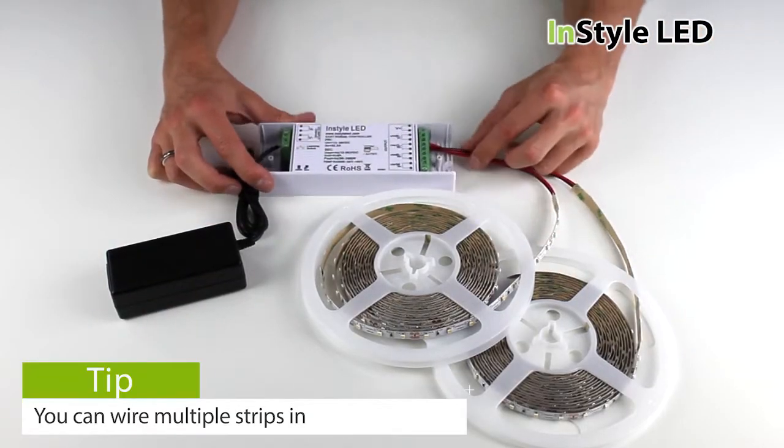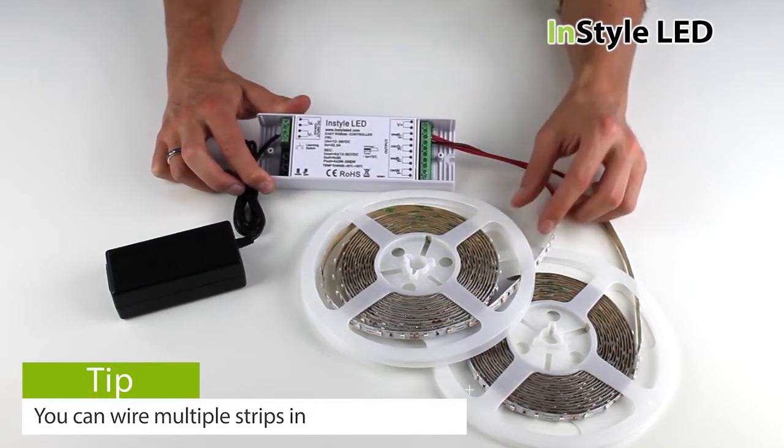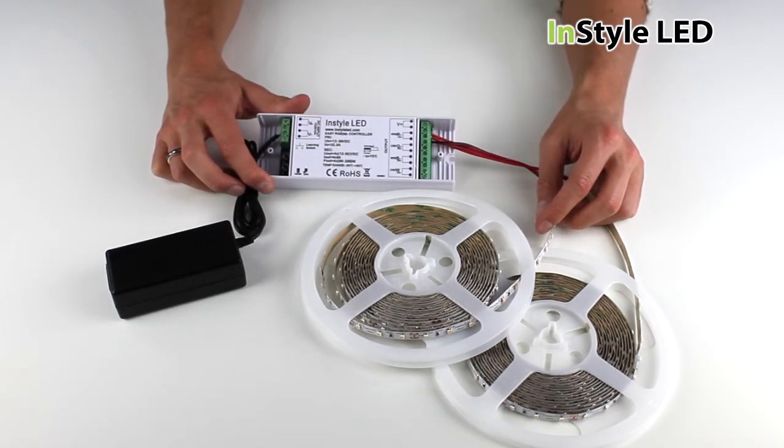You can wire multiple strips into the one dimming receiver as long as the total wattage of the LED tape does not exceed that of the transformer.